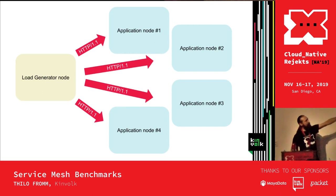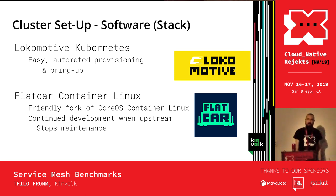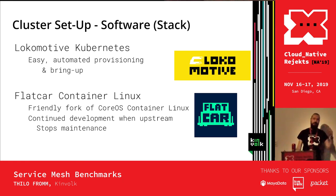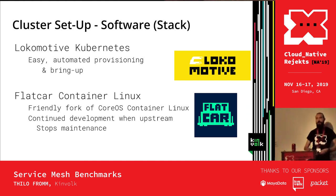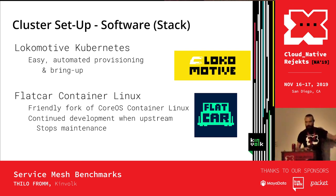The load generator node talked HTTP 1.1 to four application nodes. For the software stack, we used our Lokomotive Kubernetes distribution, which allows easy one-command provisioning and is neatly automated. That ran on Flatcar Linux — a friendly fork of CoreOS Container Linux. So we have the full stack under our control from OS through container runtimes to Kubernetes, and all of it is open source.